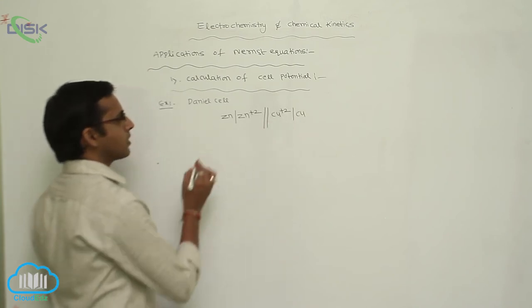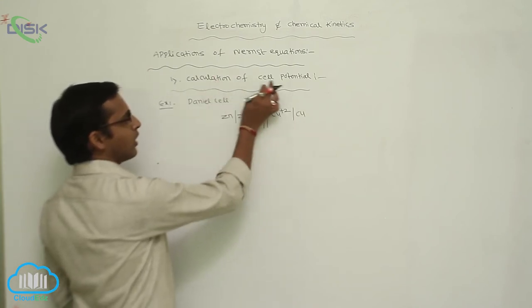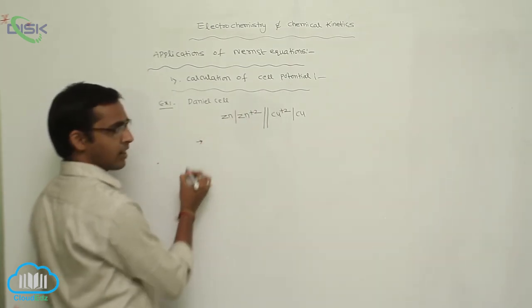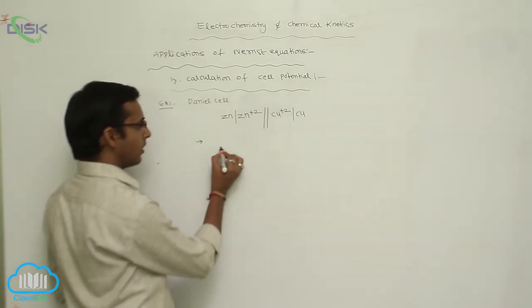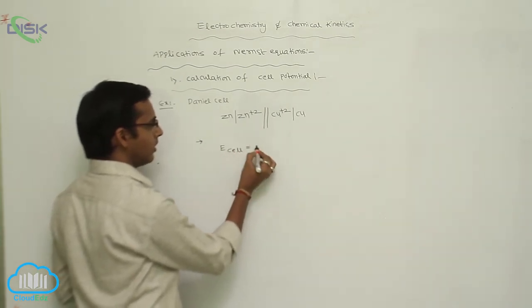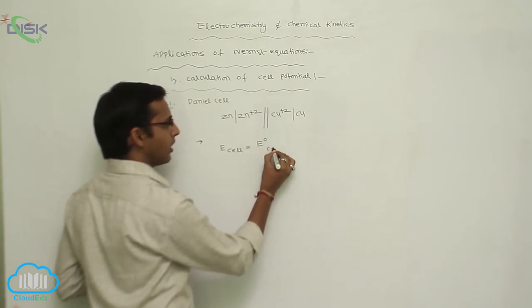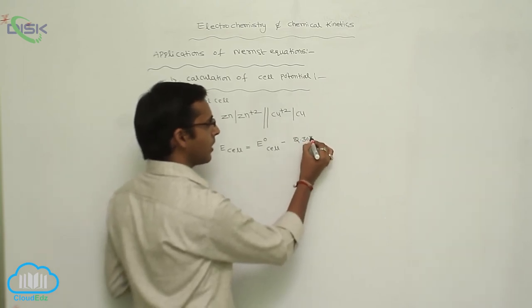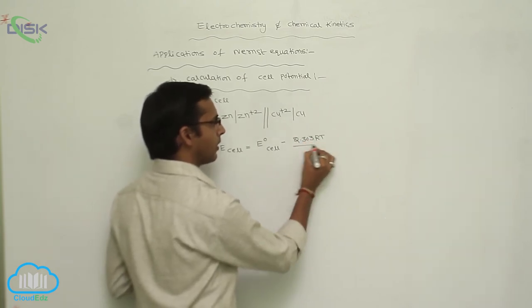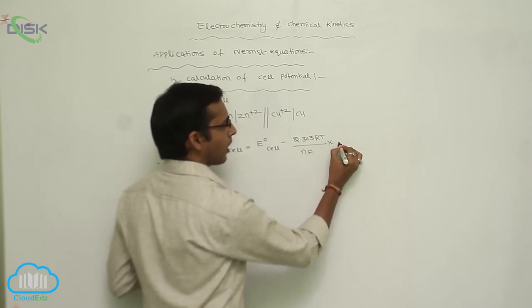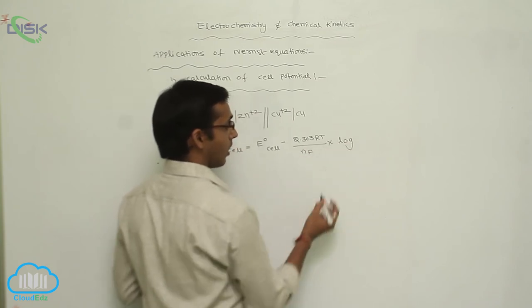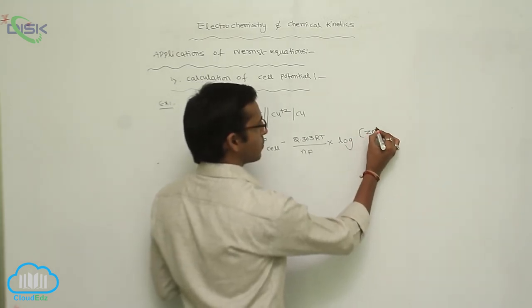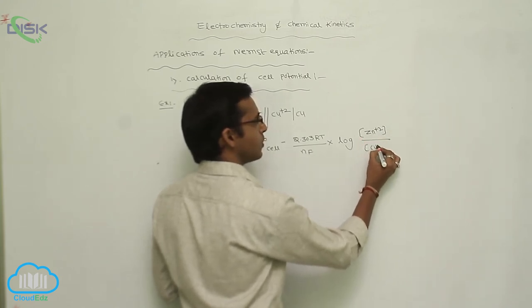So the calculation of cell potential for non-spontaneous and non-standard conditions is: E cell equals E naught cell minus 2.303 RT by nF into log concentration of Zn plus 2 by concentration of Cu plus 2.